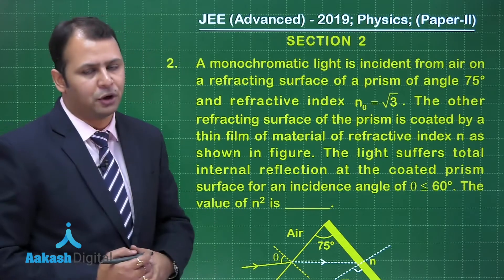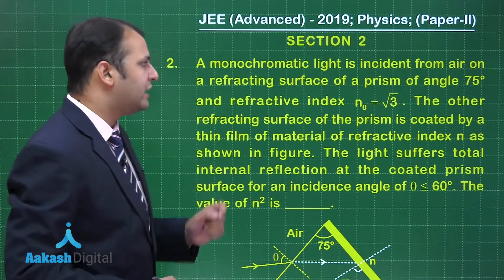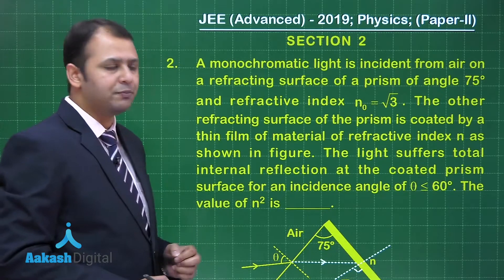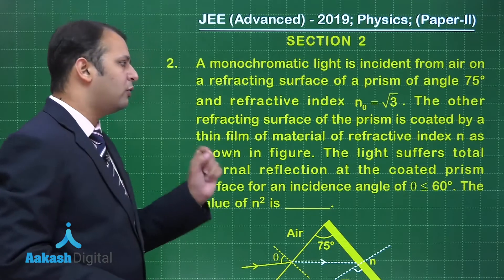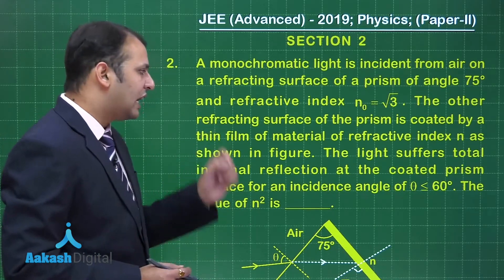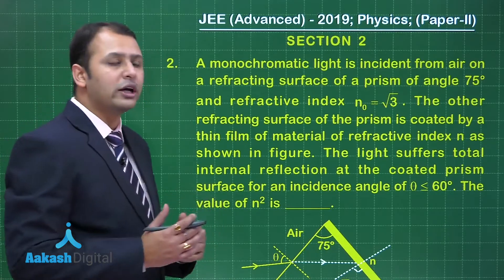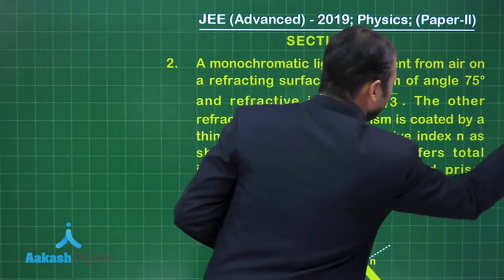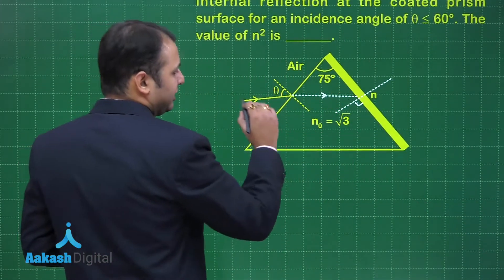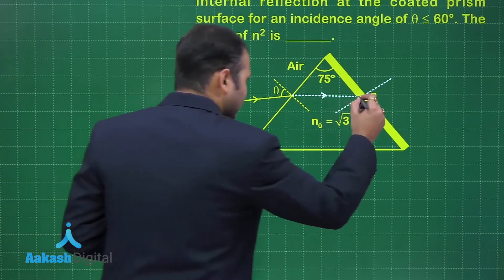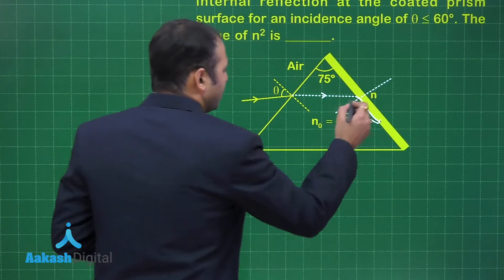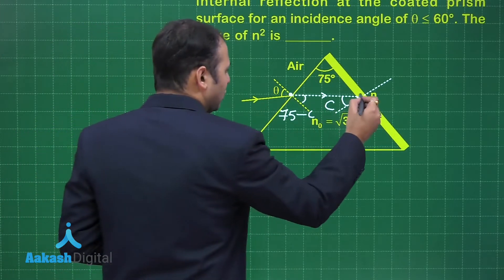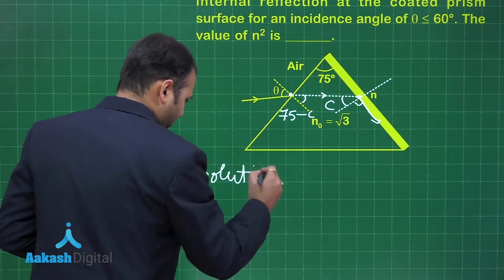Question 2 belongs to the chapter of Ray Optics. A monochromatic light is incident from air on a refracting surface of a prism with angle 75° and refractive index √3. The other refracting surface of the prism is coated by a thin film of material with refractive index n as shown in the figure. The light suffers total internal reflection at the coated prism surface for an incidence angle θ ≤ 60°. We need to find the value of n².